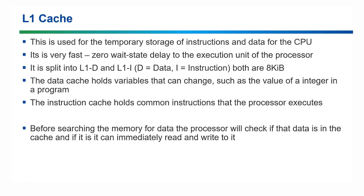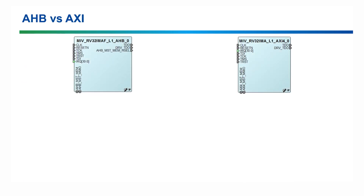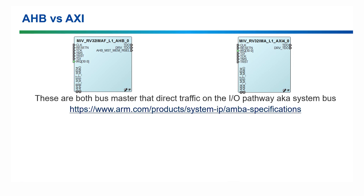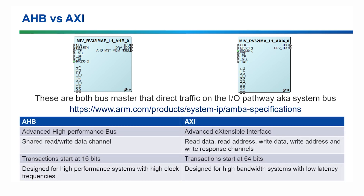The cache allows the processor to save time waiting for memory, as it's built directly onto the core. Because of this, the core can check the L1 cache before getting information from memory and start working straight away if the data it needs is present there. Finally in the naming convention, we have the AHB and AXI variants of the core. These are both types of bus master that control the flow of data or traffic on the IO pathway, or system bus. They were created by ARM and are part of the AMBA bus spec.